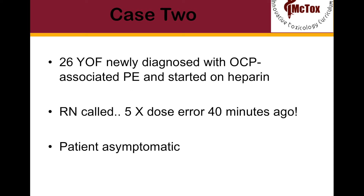In Case 2, we have a 26-year-old female newly diagnosed with an oral contraceptive pill-associated PE and was started on heparin. Her nurse calls you because she thought that she had given 5 times the ordered dose by IV about 40 minutes ago. The patient is currently asymptomatic. How are you going to approach this situation?